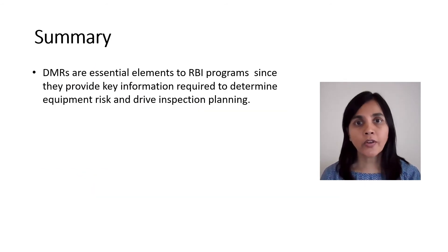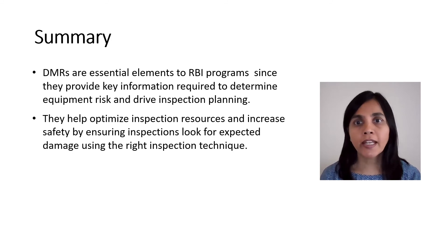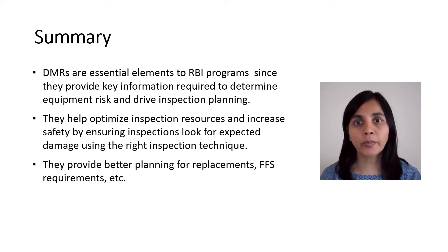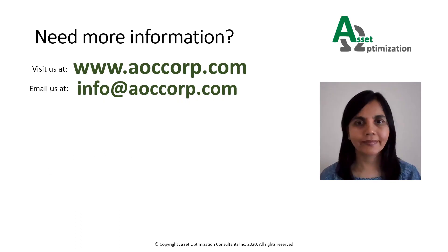In summary, DMRs are essential elements to our RBI programs since they provide key information required to calculate equipment risk and to formulate inspection plans. They help optimize inspection resources and increase safety by ensuring inspections look for expected damage using the right inspection techniques. They also provide better planning for replacements and assessing fitness for service requirements. Finally, they increase confidence in inspection plans by providing information on the type of damage that's expected. More information on risk-based inspection and damage mechanism reviews is provided on our website at www.aoccorps.com. Thank you for watching.